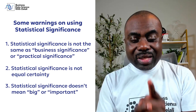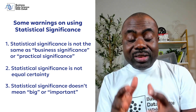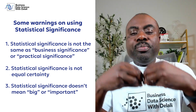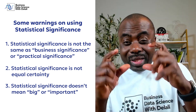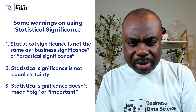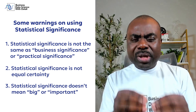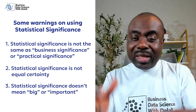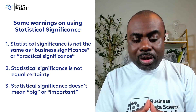To recap the three warnings: number one, a statistically significant result does not mean the effect you're measuring is big or important. Number two, a statistically significant result is not necessarily practically or business significant — consider cost and other factors, not just statistical significance. Number three, statistical significance does not equate to certainty. A 5% significance level means that one out of 20 times, the result can go wrong.